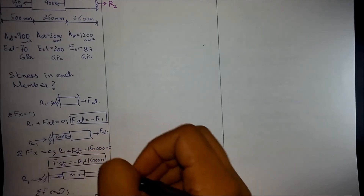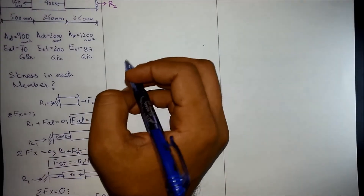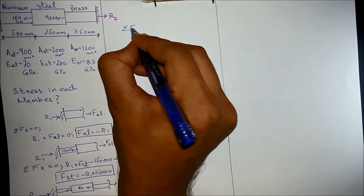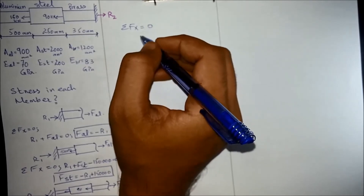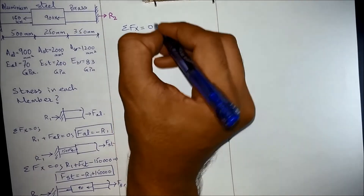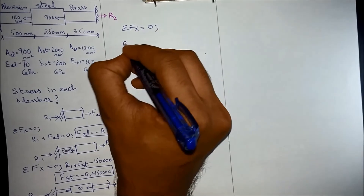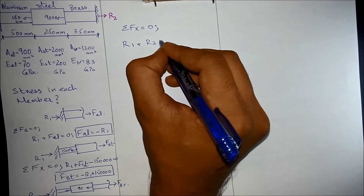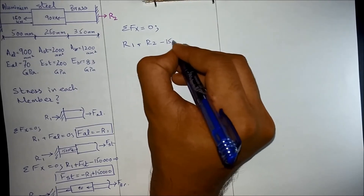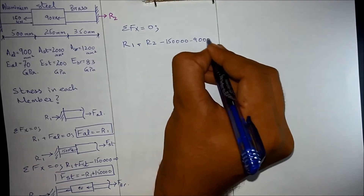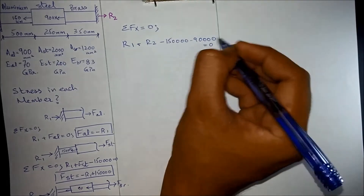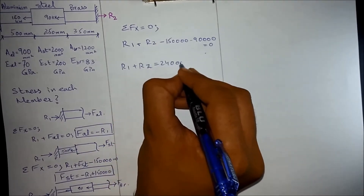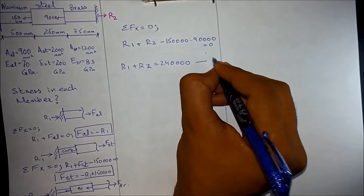In the next step we apply the summation of forces to the whole member. Summation of forces gives: R1 plus R2 minus 150,000 plus 90,000 equals zero, so R1 plus R2 equals 240,000. From both ends the supports are fixed. Let's call this equation number 1.